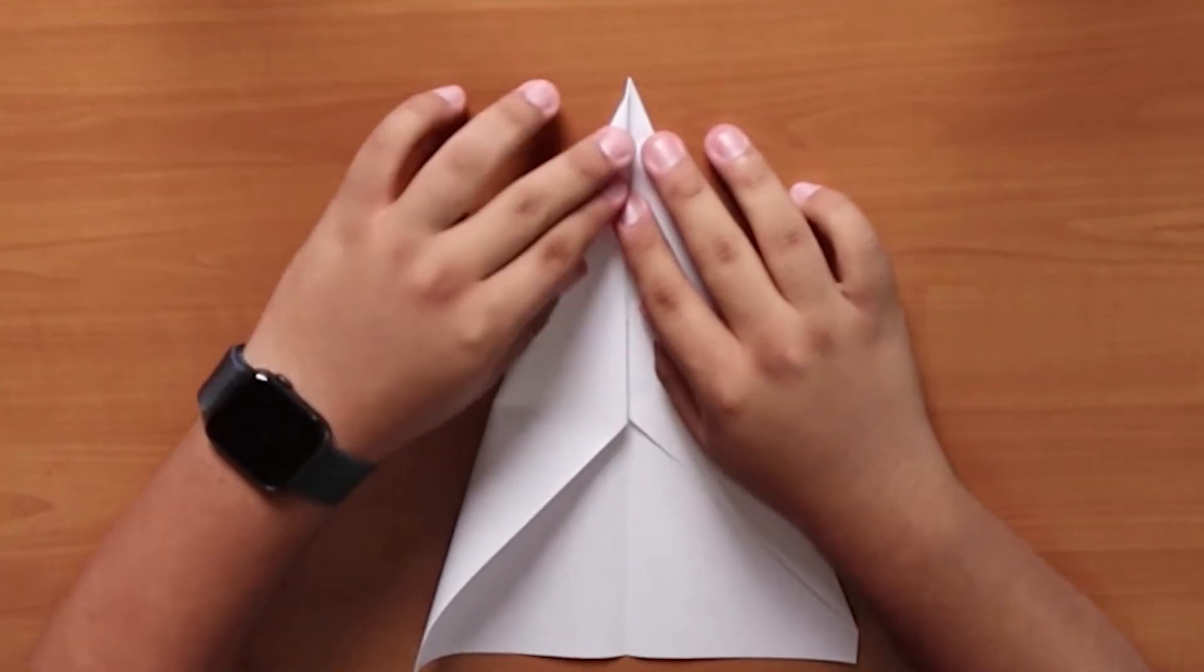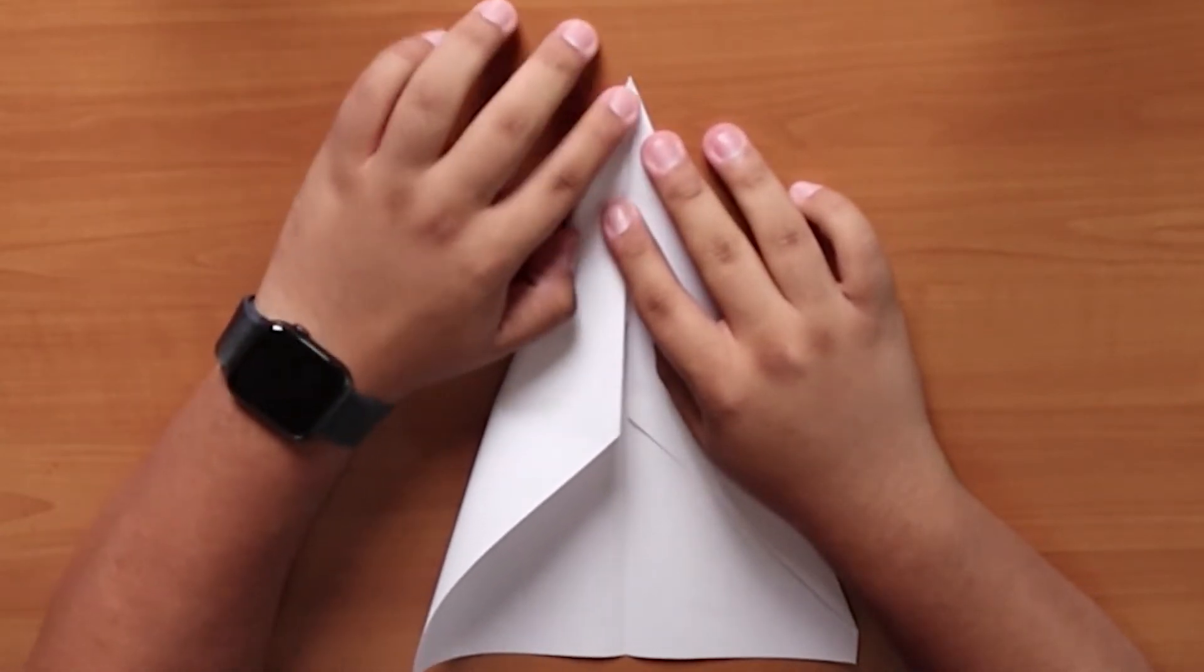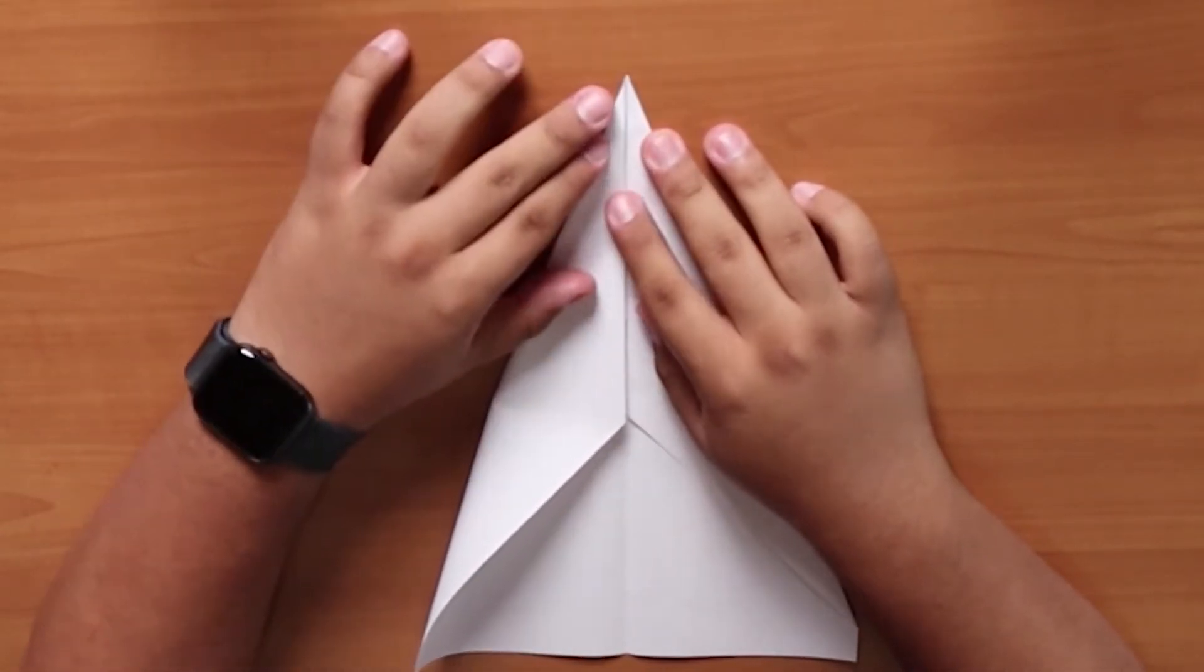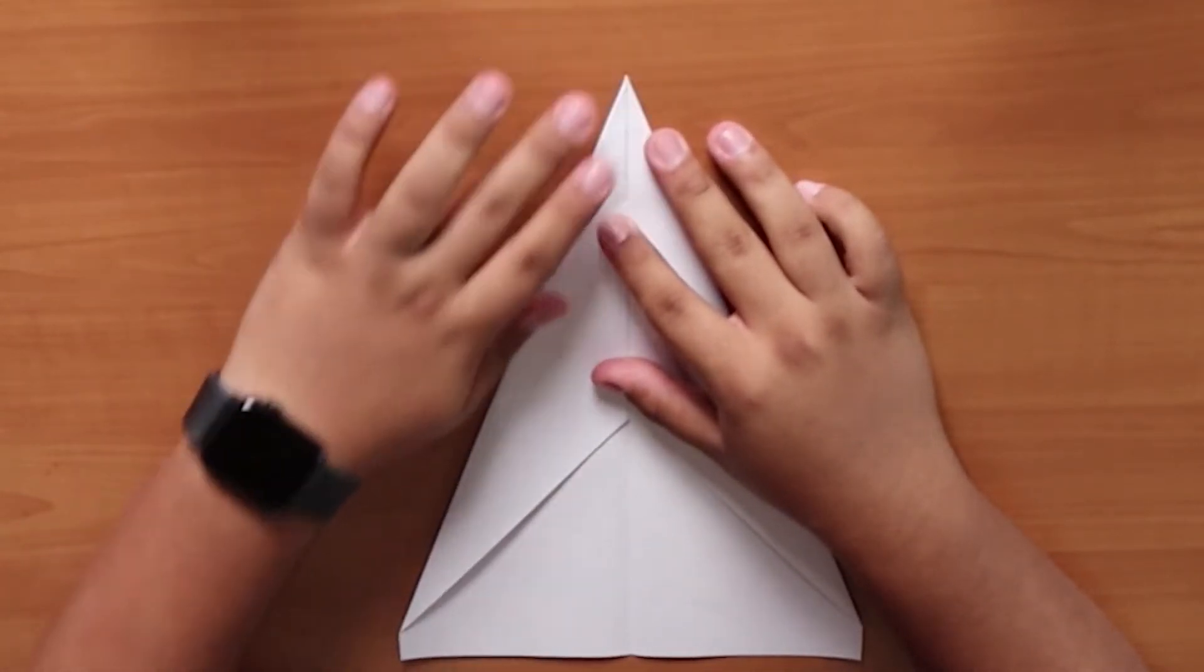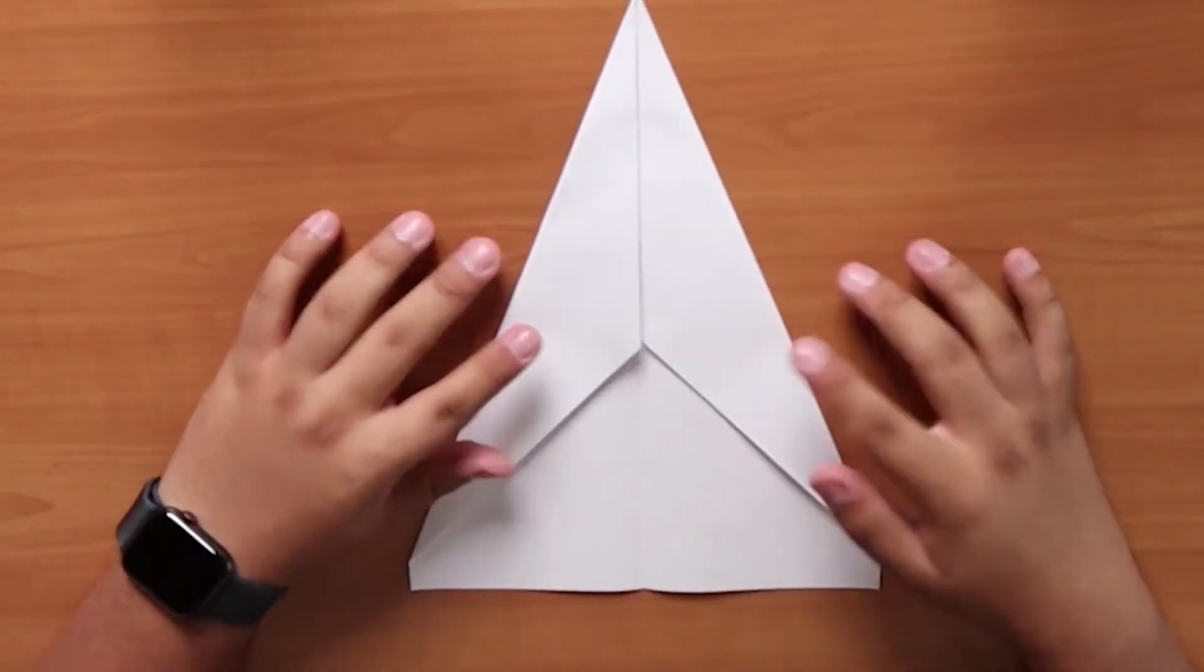Try your best to keep both sides even, as it would help the paper airplane become more aerodynamic. Always use the middle crease as a guide to how far down you should fold, as well as how far left or right you should fold it.